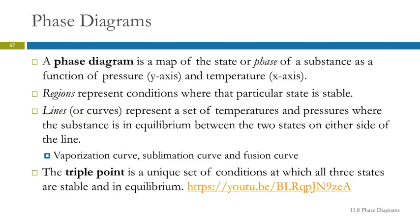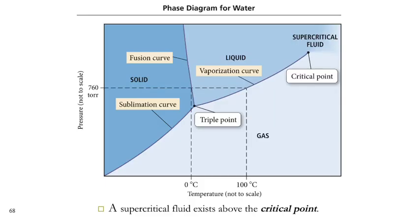And there are lines that represent the pressures and temperatures at which those substances change states. Those lines are called the vaporization curve, sublimation curve, and fusion curve. Let's look at an example here. This is for water. It is not to scale, but it just gives us a general idea. Pressure on the y-axis, temperature on the x-axis.